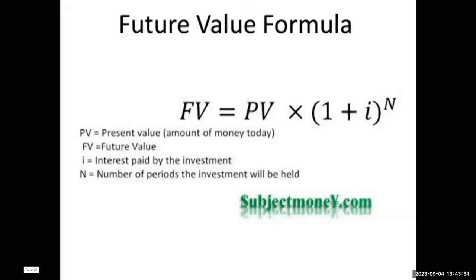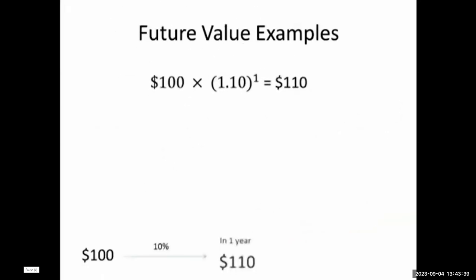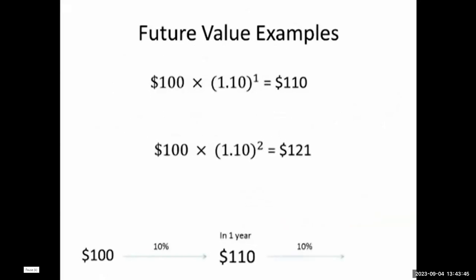Let's do some examples. If we invest $100 at 10% for one year, it grows to $110. If we keep that $100 in the account and allow it to grow an additional 10%, it would grow to $121. In the first year our investment grew $10, but in the second year it grew $11. This is because of compounding. In the second year, not only did we earn 10% on our $100 investment, but we also earned 10% on the interest earned from the previous year.